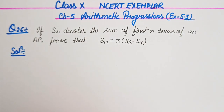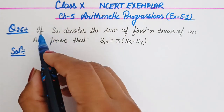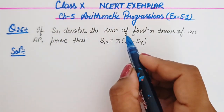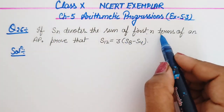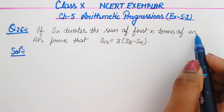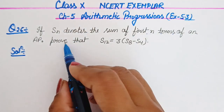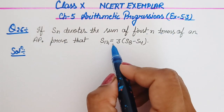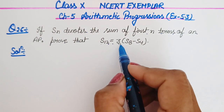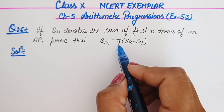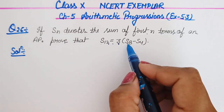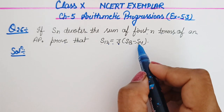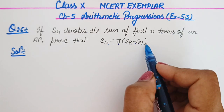Let's see what is given in Question 26. If SN denotes the sum of first N terms of an AP, prove that S12 is equal to 3 times the bracket S8 minus S4.